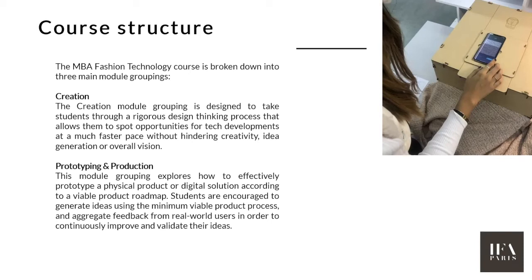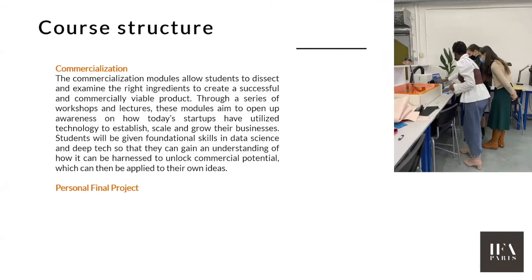The next module grouping is called Prototyping and Production, which revolves around the notion of MVP — minimum viable product. You'll look into product management and roadmaps, and rapid prototyping. You'll also have theoretical modules such as the Fourth Industrial Revolution, where you learn about the latest technological advances completely transforming our society. The last module grouping is called Commercialization.